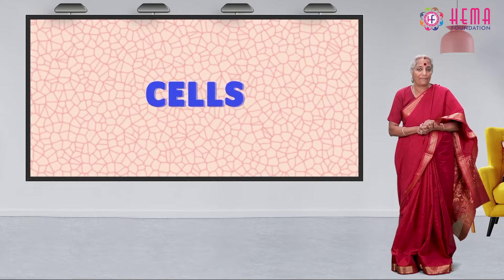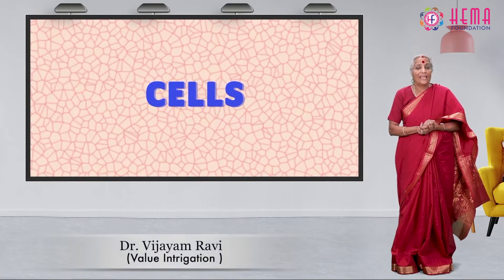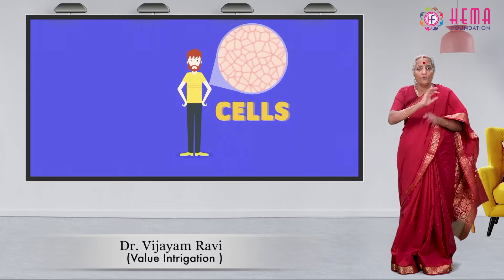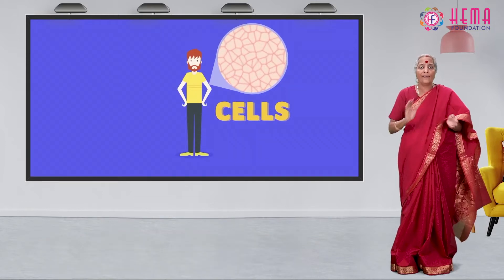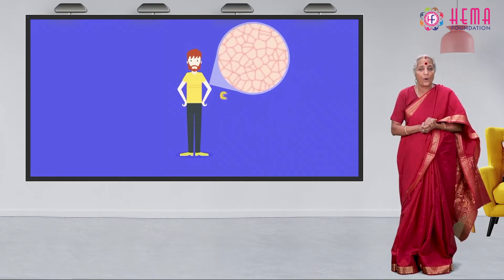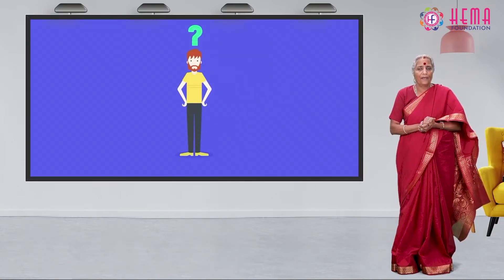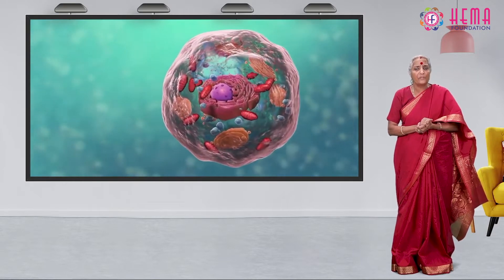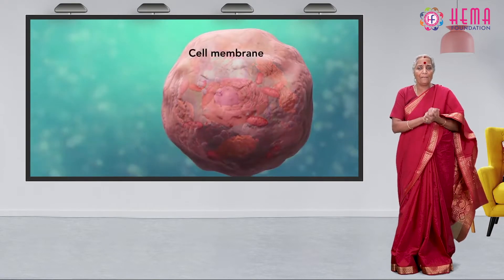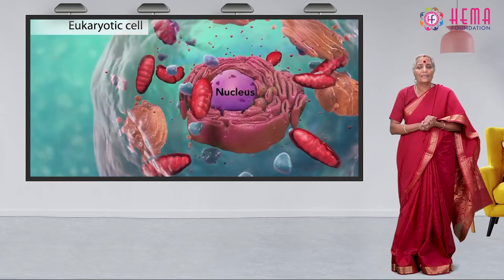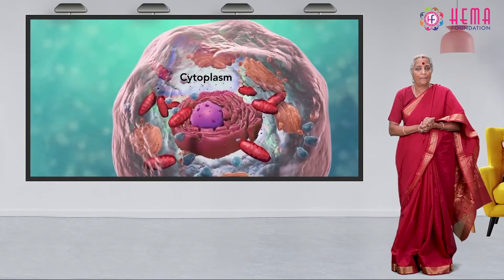A cell is a unit of life that can live by itself and includes all living organisms and tissues of the body. It consists of three major parts: the cell membrane, nucleus, and cytoplasm.